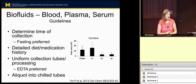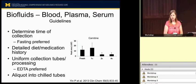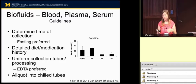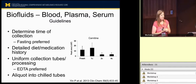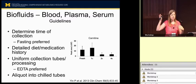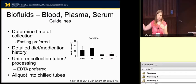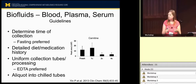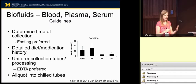Getting into the biofluids — starting with blood plasma and serum. First, determine the time of collection. Generally we recommend a fasting state, though it is objective dependent. When working with a patient population, it's best to take a detailed diet and medication history. Metabolites come from a variety of factors — drug metabolites, age-dependent metabolites, nutrition metabolites. Having that information may help you determine why you're getting some differences in the end and could help hone your design and collection going forward.